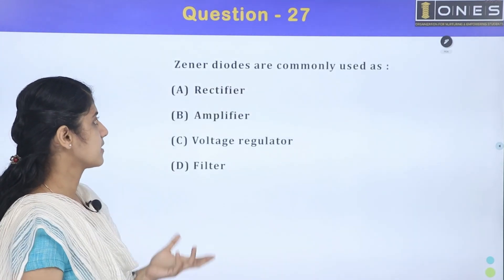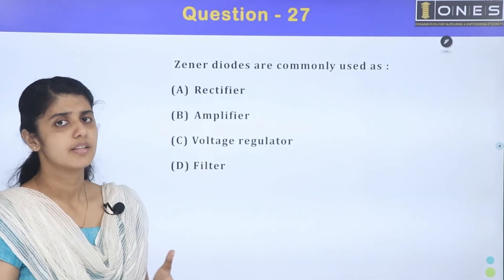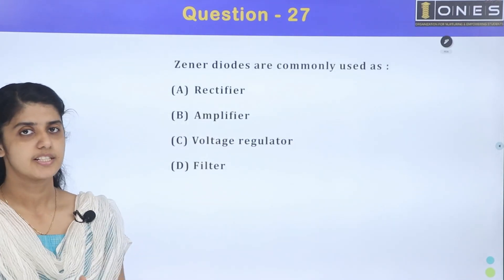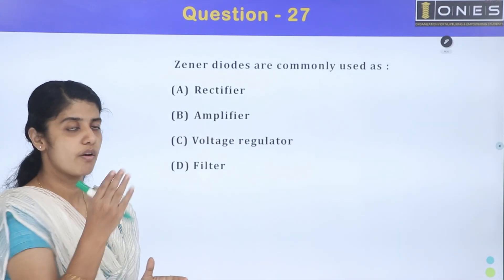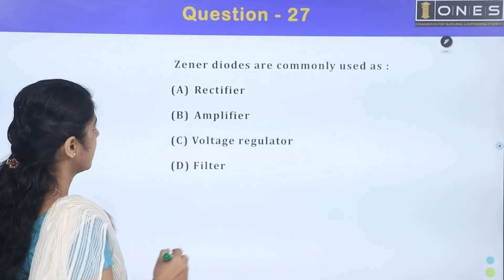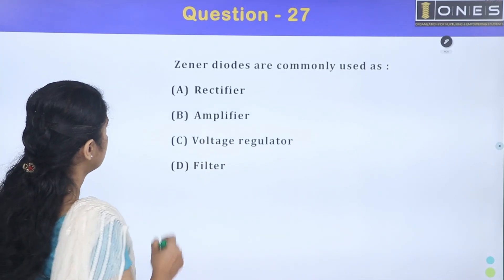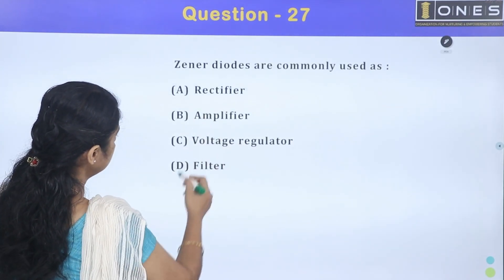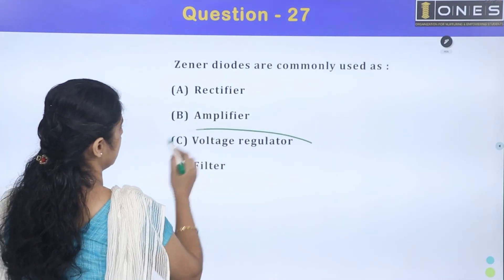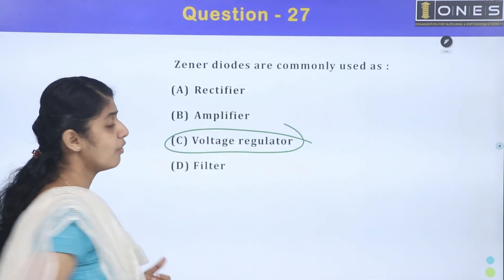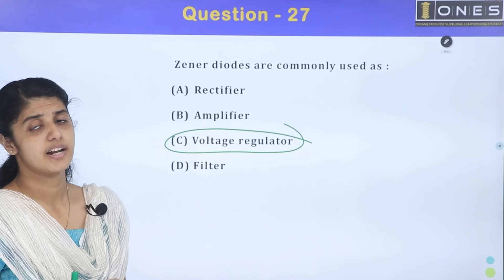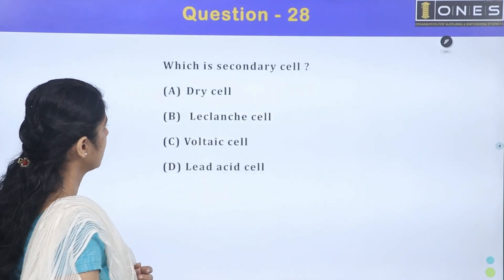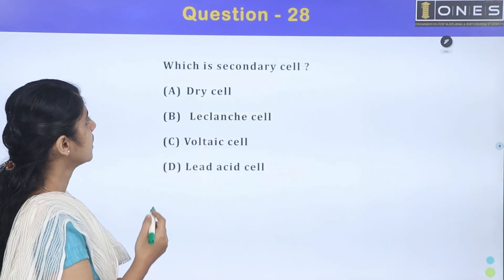Next question: Zener diodes are commonly used for voltage regulation. They provide constant voltage. Option C — Zener diodes are used as voltage regulators.